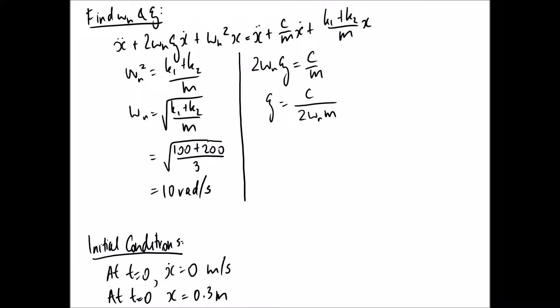We then need to go through and find what omega n and our damping ratio are. The natural frequency is not going to change because we haven't changed the springs or the mass. However, the damping ratio will change because we've changed the value of the damper. So we're going to pick up this question here.